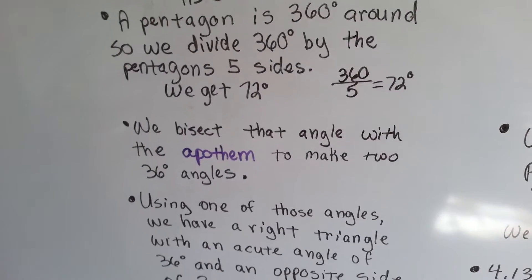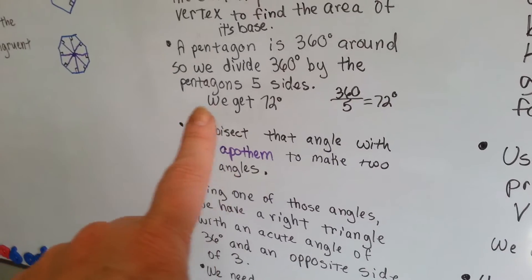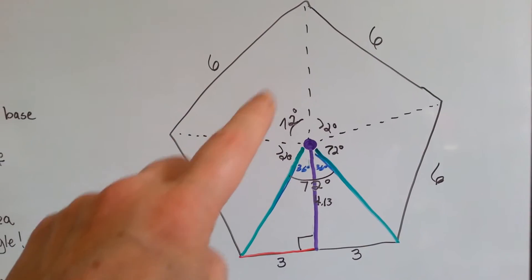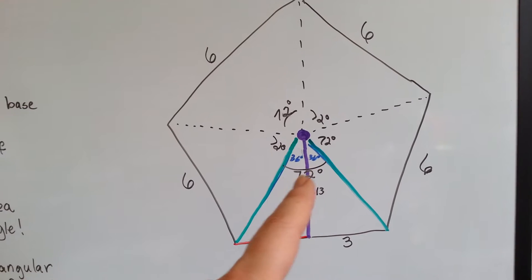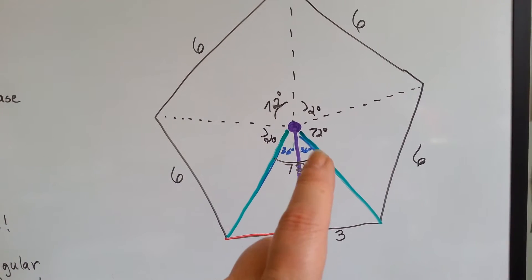We bisect that angle with an apothem to make two 36 degree angles. So, we had this 72 degree angle, and we bisect it. Here's the 72 degree angle. We bisected it with the apothem and now we have a 36 and a 36.